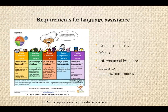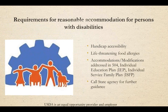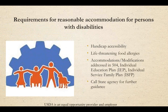Civil rights requirements state that provisions must be made for non-English speaking program participants. For example, enrollment forms or menus may need to be translated into Spanish where it is necessary for families to comprehend. Another example of language assistance would be providing braille or large print for visually impaired program participants. Civil rights requirements state that reasonable accommodation must be made for persons with disabilities — for example, ramps for those in wheelchairs to access food programs, or food component substitutions for those with medically documented food allergies or disabilities.